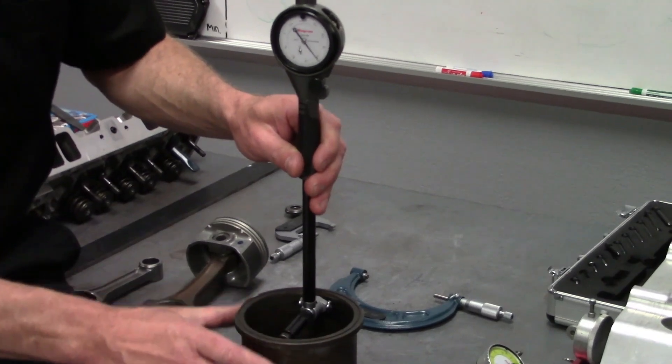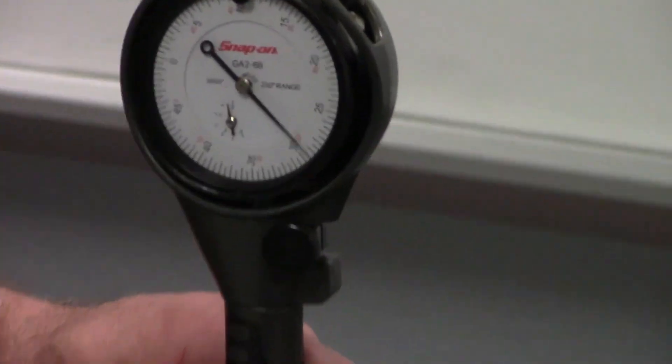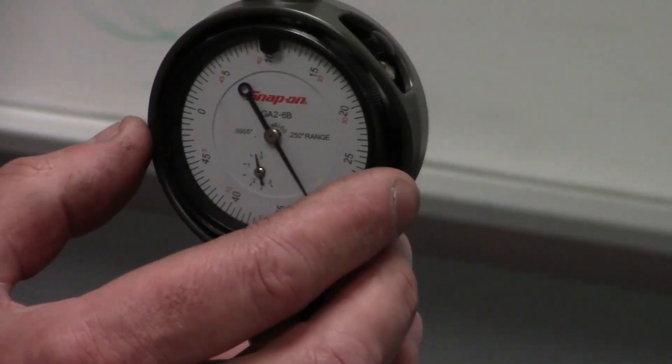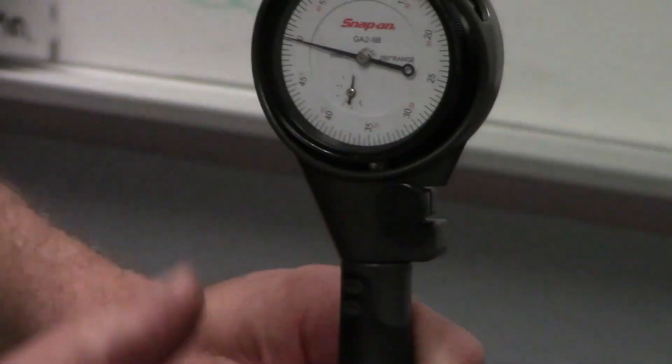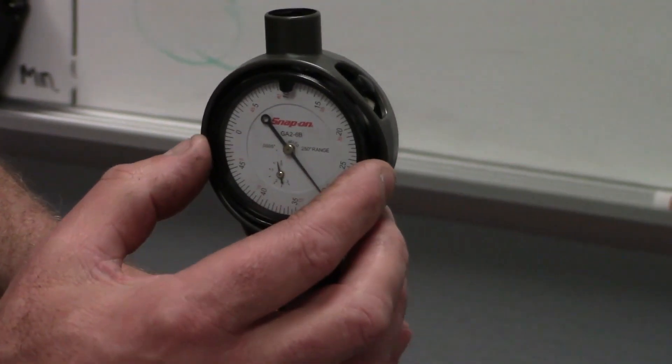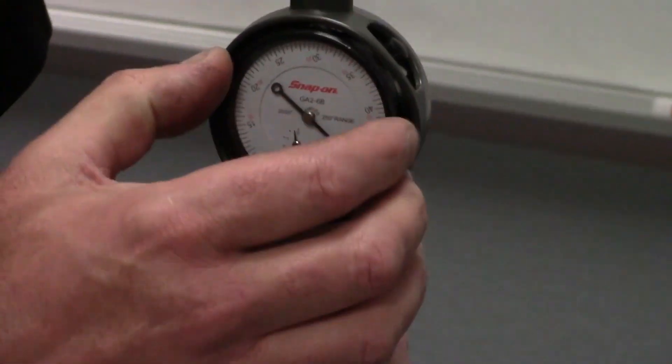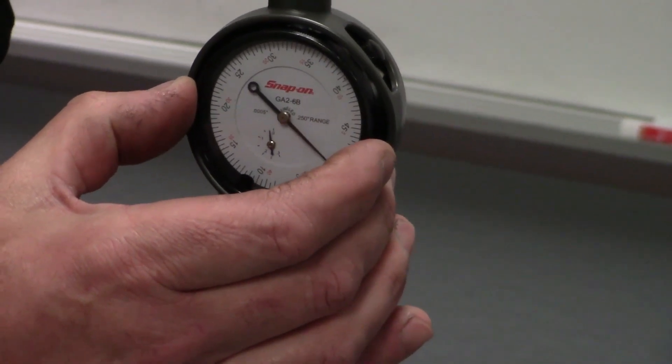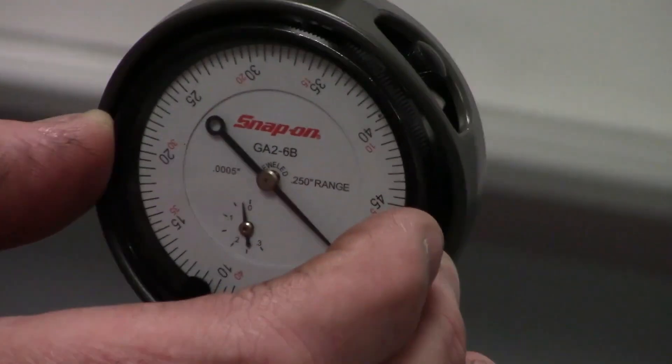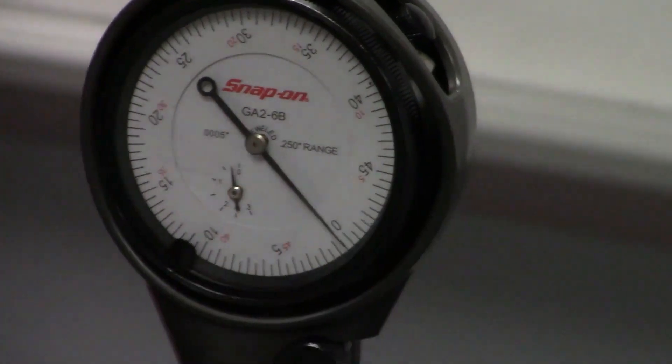Put the bore gauge in, find the smallest point, and then what you want to do is zero out your dial indicator. If we find the smallest point here, you want to take and zero our indicator out. You might have to fine-tune that a little bit, but if we get on zero there.